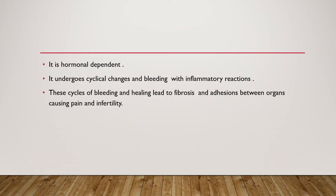Since it is an endometrial tissue, the endometrium is hormonally dependent — it depends on estrogen and undergoes cyclical changes with estrogen and progesterone. So this endometrial tissue, although ectopic and not found in the endometrial cavity, undergoes bleeding and subsequent inflammatory reaction. These cycles of bleeding and inflammatory reaction will lead to subsequent adhesions between the organs, which lead to pain and infertility.